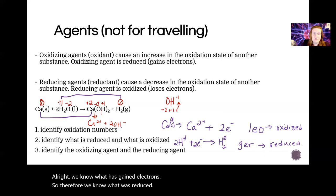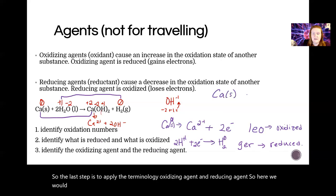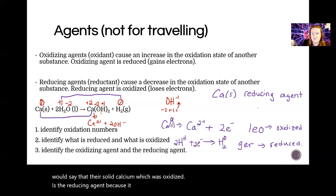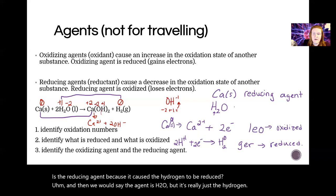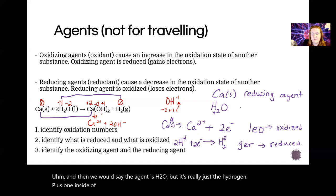Now we know what has gained electrons, so therefore we know what was reduced. The last step is to apply the terminology oxidizing agent and reducing agent. The solid calcium which was oxidized is the reducing agent because it caused the hydrogen to be reduced.